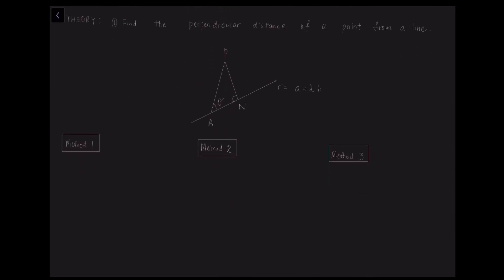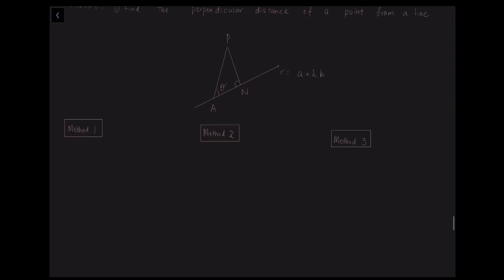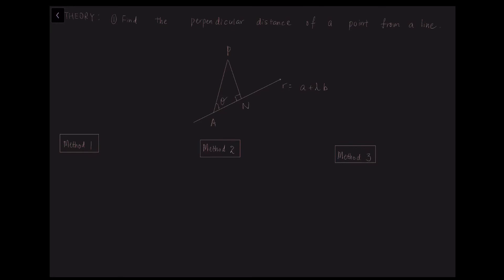Now we want to find the perpendicular distance of a point from a line. Given points A and P with position vectors a and p, and a line parallel to vector b, the required perpendicular distance is |NP|. There are three methods. The first uses the sine identity: |NP| = |AP| sin θ = |AP × b| / |b|, where AP = p − a.